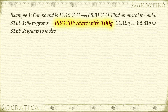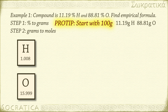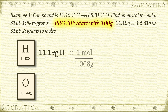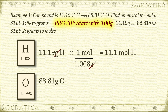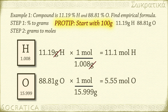Step 2: convert from grams to moles using the gram-atomic masses of each element from the periodic table as conversion factors. 11.19 grams of hydrogen × (1 mol / 1.008 g) = 11.1 moles of hydrogen. These calculations work best if you use at least 3 sig figs, so be careful with rounding. 88.81 grams of oxygen × (1 mol / 15.999 g) = 5.55 moles of oxygen.